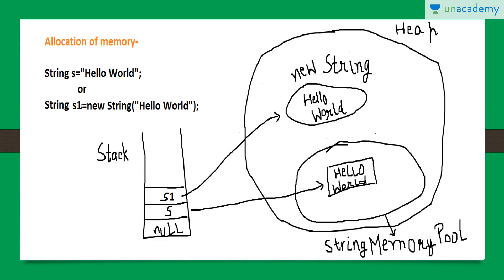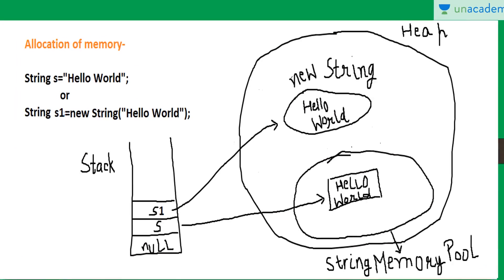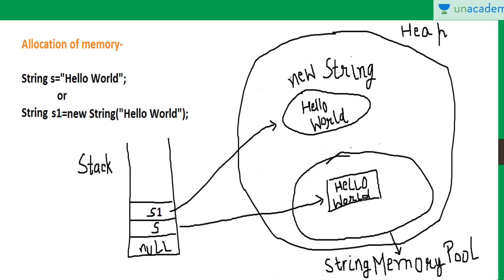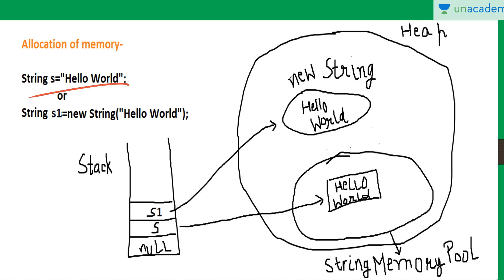Now, string is a reference data type but it can also behave as a primitive data type. As you can see here, I am giving memory to string using two methods. First is the same as that of primitive data type, and second is using the new keyword. This is the exceptional data type which can be used to give memory both as a primitive data type as well as a reference data type. Now what is the difference between these two methods?